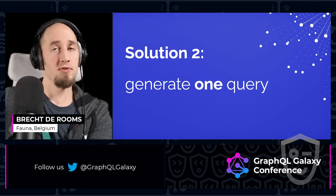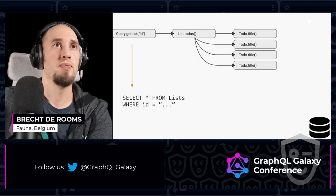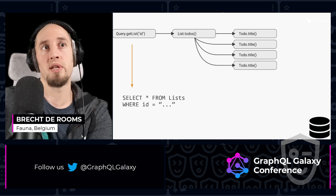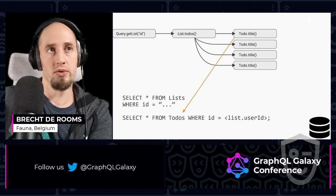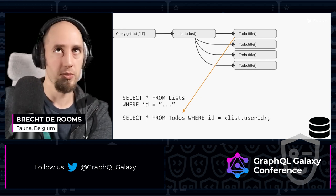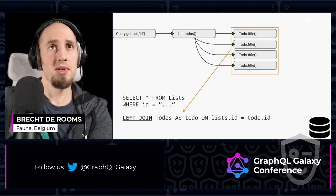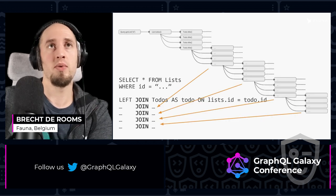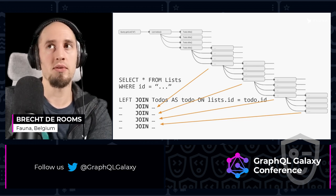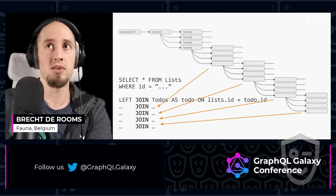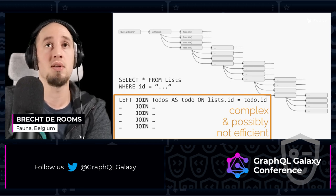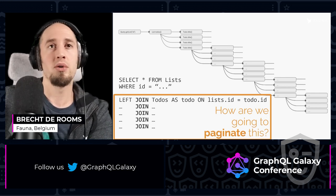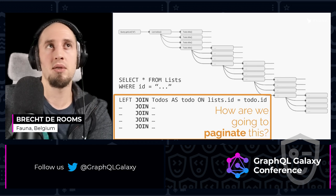Solution two: generate one query, which is what Fauna does behind the scenes. But why doesn't everyone do that? If we would look at SQL, for example, and let's say we would select star from lists where ID is equal to something, then we would go to the todo calls and do the same and try to concatenate that query. Of course we'll have to do it for multiple todos, so we'll end up with a join. And the problem is if we go deeper like that in a GraphQL traversal, we might end up with a lot of joins. Not only is this super complex to analyze this query and then generate SQL from it and then transform the results back to a GraphQL format, it might also be inefficient depending on the joins. You might overfetch a lot and then have to throw away things. And then how are we going to paginate this? Limit 100 might not be exactly what you're looking for.